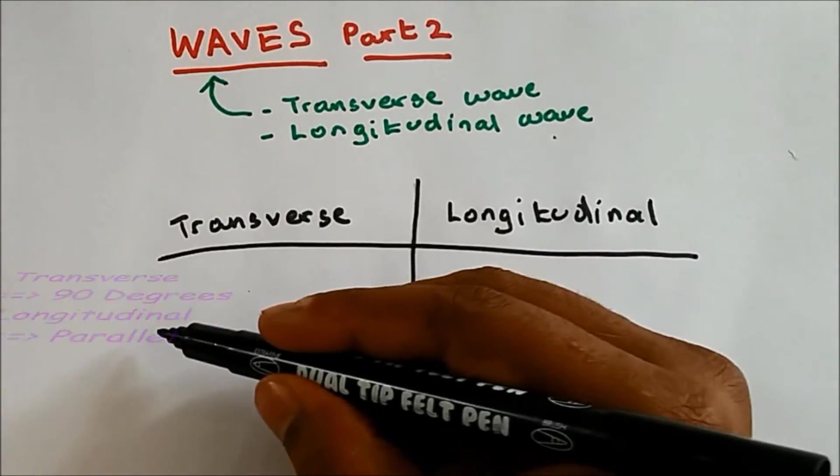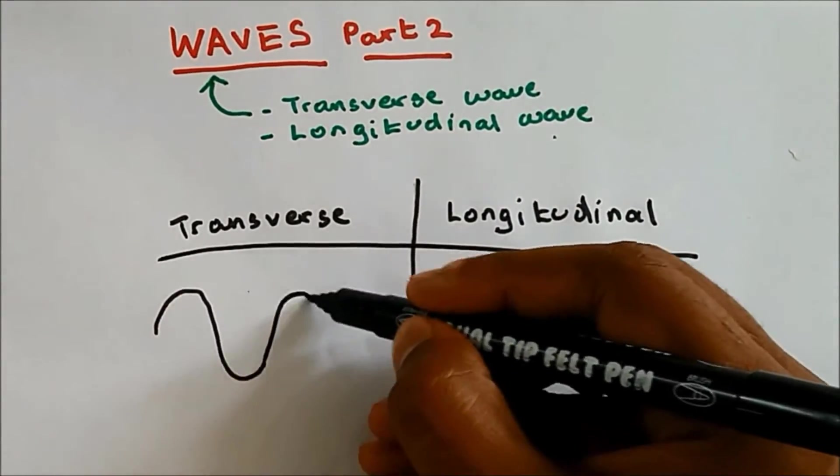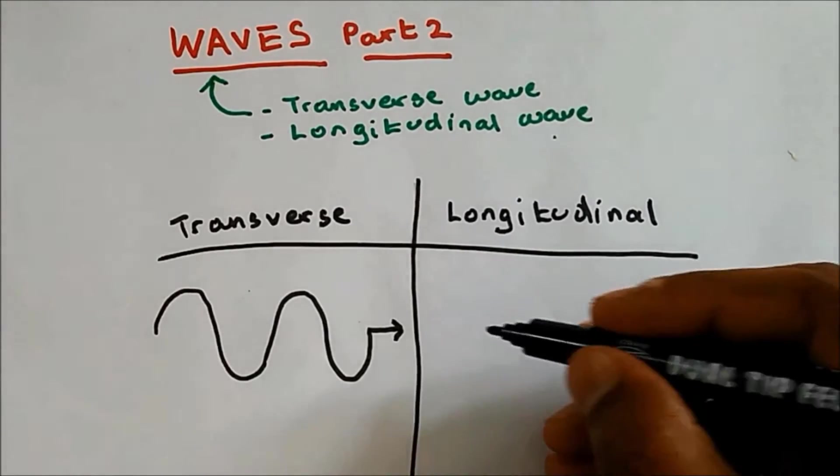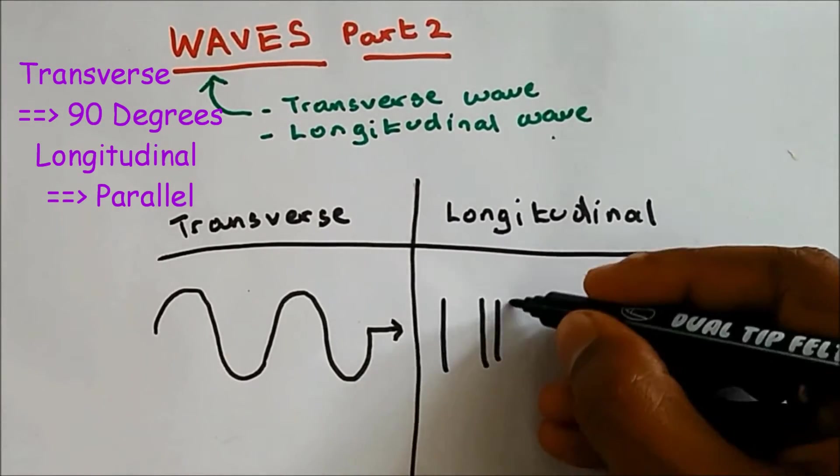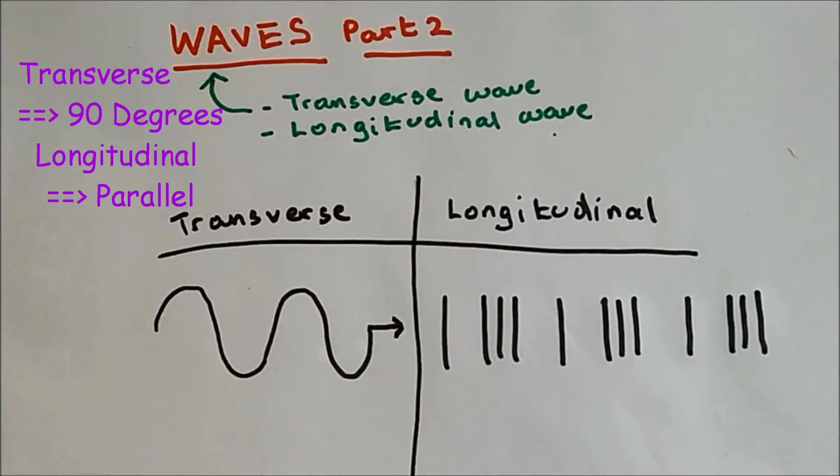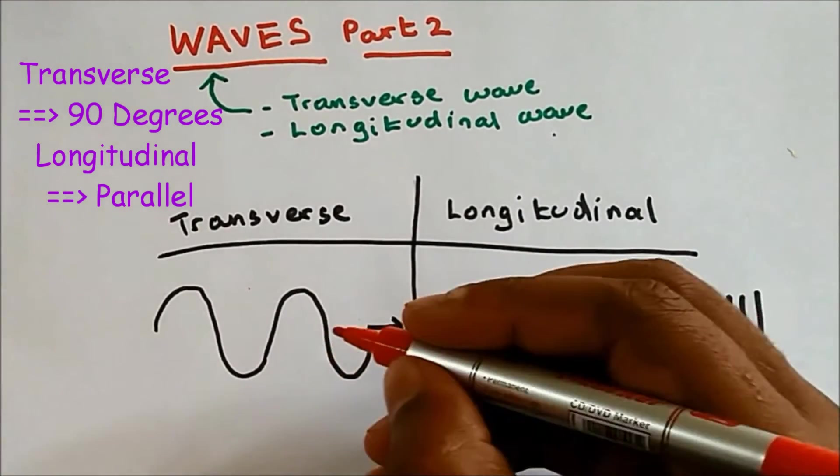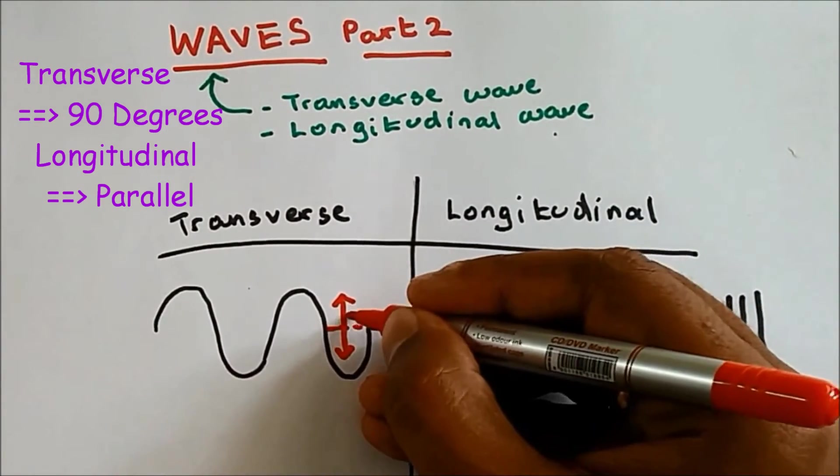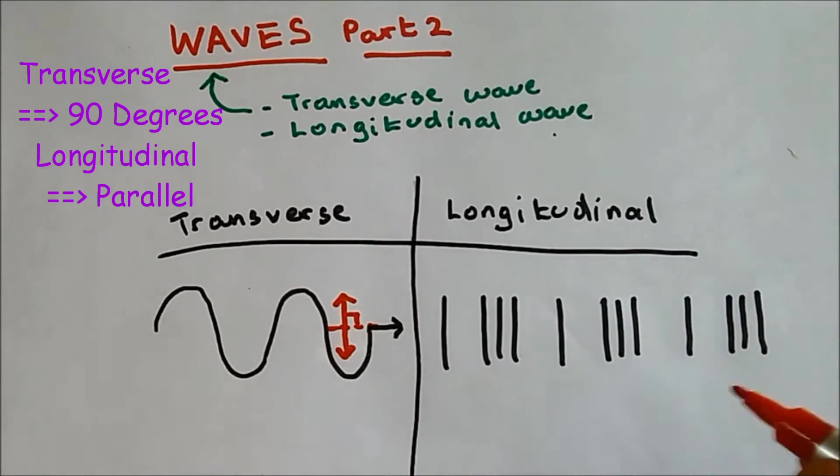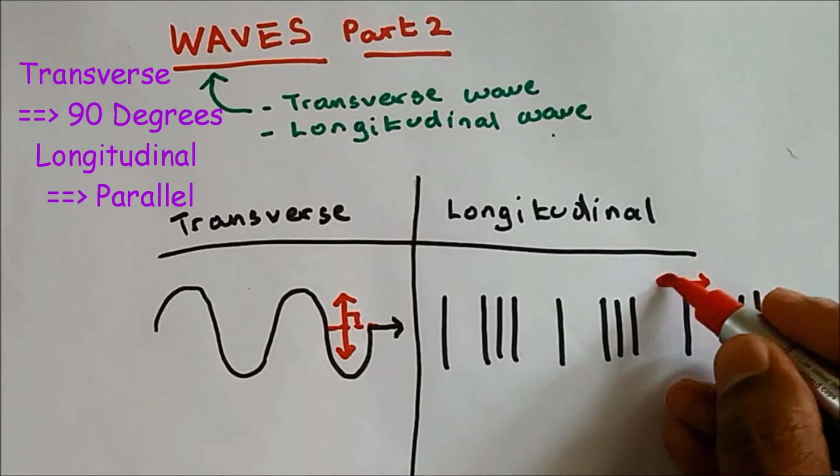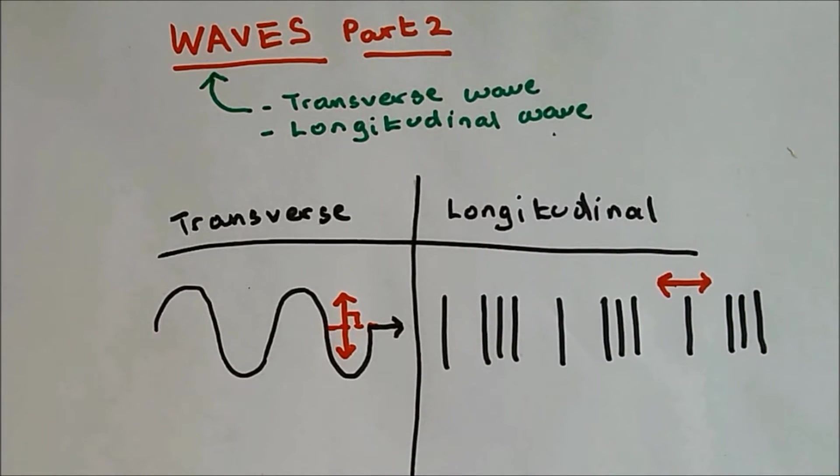The transverse wave moves up and down, whereas longitudinal wave vibrates parallel to the direction of the wave. So from this diagram, we can see that the vibration for transverse wave is up and down, which is 90 degrees to the direction of the wave, whereas for longitudinal wave is side by side. The vibration is side by side.